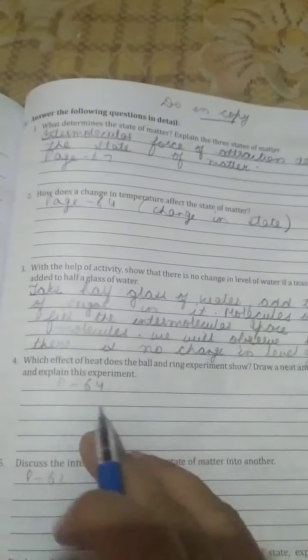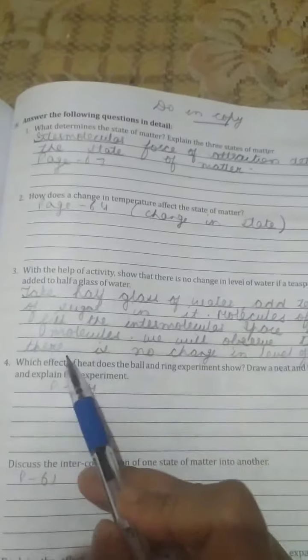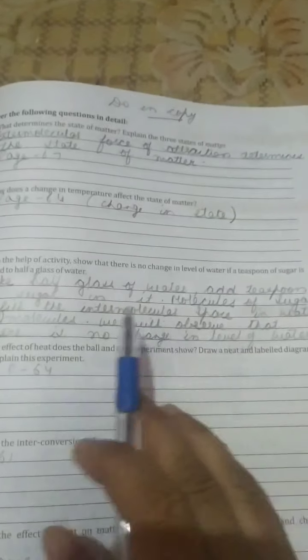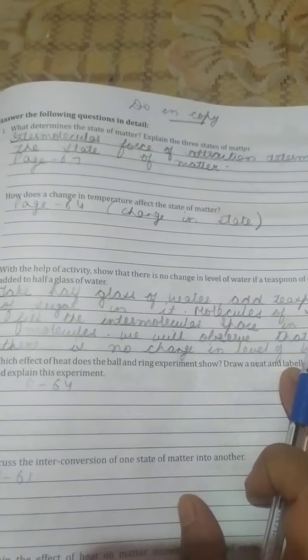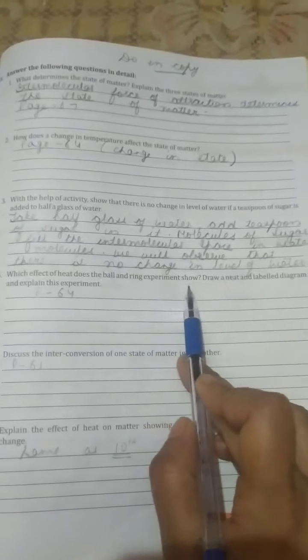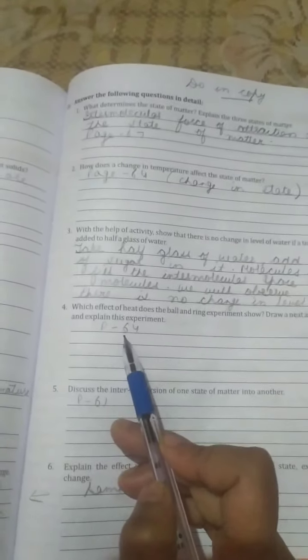So intermolecular space is there, and in between the intermolecular space, the sugar atoms can easily go and occupy that vacant space. We will observe that there is no change in level of water because the sugar has already occupied the intermolecular space. Next, fourth question: which effect of heat does the ball and ring experiment show?